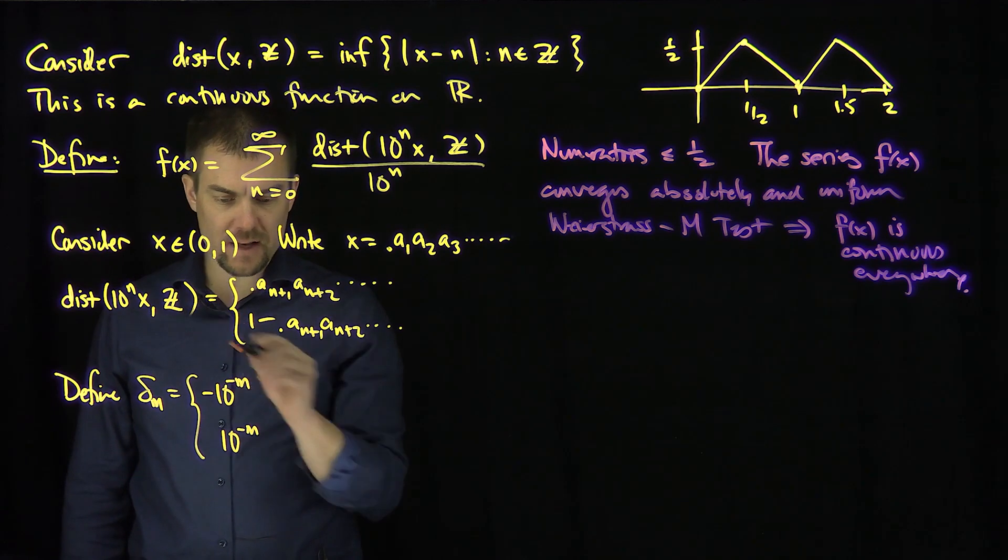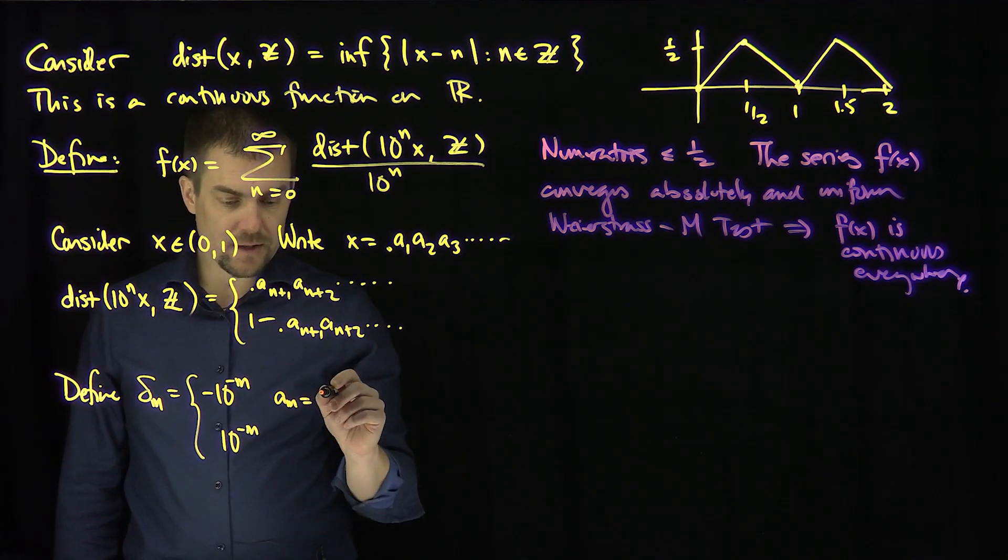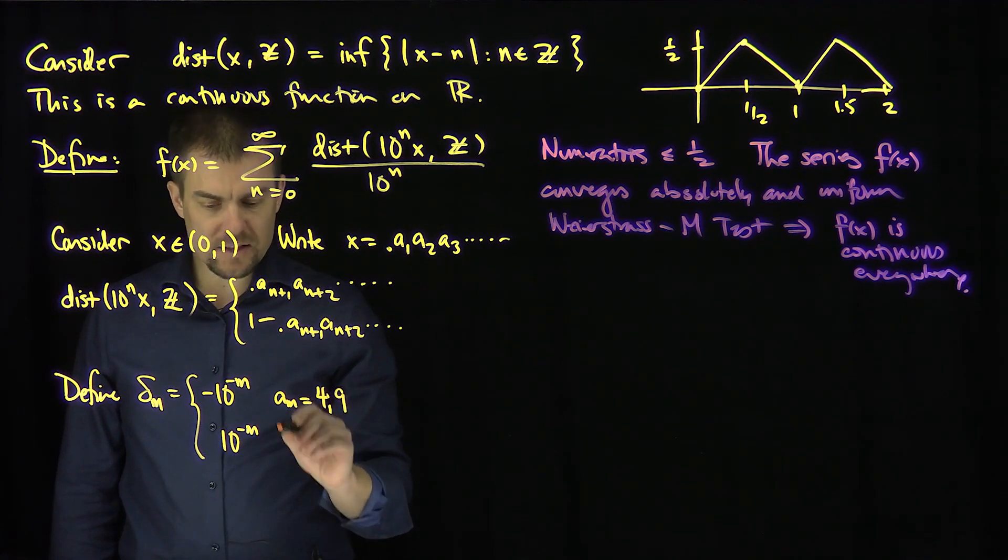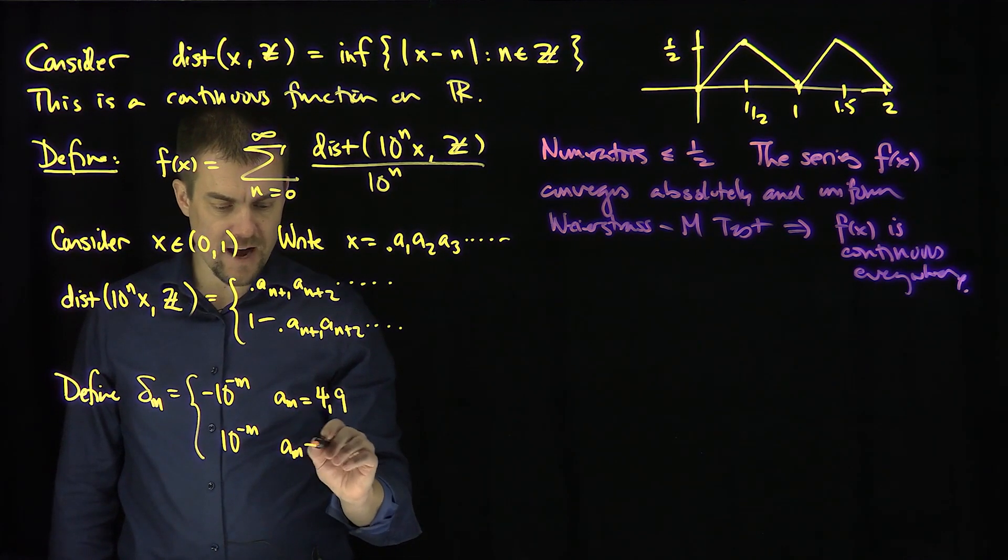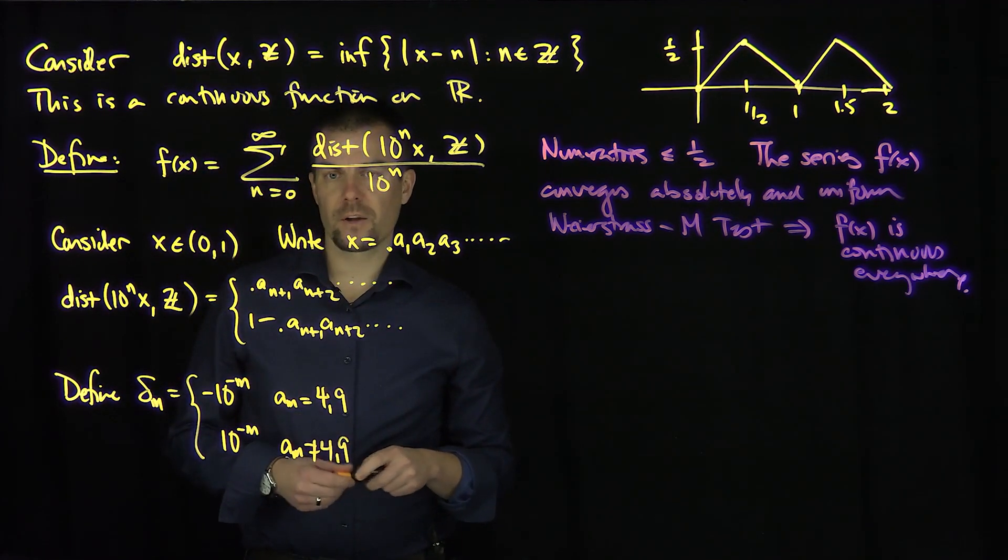It's going to be -10^(-m) if a_m from the number x is either a 4 or a 9. And it's going to be 10^(-m) if a_m is not 4 or 9. And the reason for this is the following.